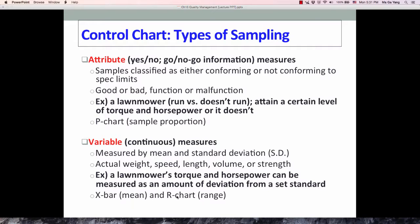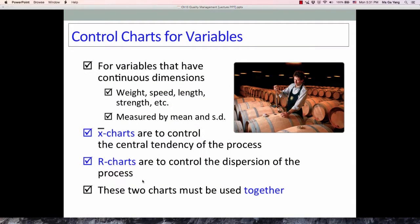We will use the control chart for variable continuous measures measured by mean and standard deviation. Always two control charts are used: X-bar chart to control the central tendency of the process, the sample mean, and R chart to control the dispersion of the process, standard deviation from the mean. These two charts must be used together—sample mean and sample standard deviation.